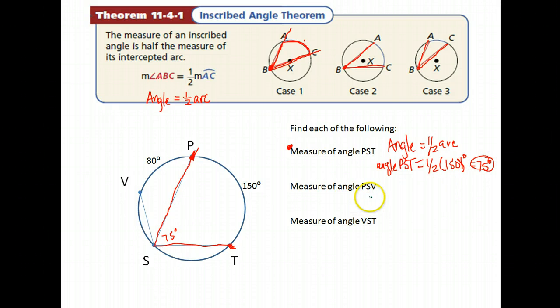All right, next, what's the measure of angle PSV? So again, I like to trace the angle. So I'm starting at P down to S, out to V. So we're talking about this angle right here. The arc that's created by it goes from P to V and it looks like it's 80 degrees. So again, to find angle PSV, we know it's equal to half of the arc. Angle equals half the arc. Our arc happens to be 80 degrees. So our angle PSV is half of 80 or 80 divided by 2, which is 40 degrees.